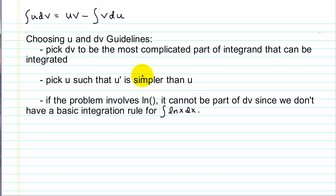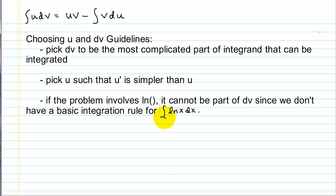The guideline on picking u is that we will be taking the derivative of u to create du, and our objective is that when we take the derivative of u, it becomes simpler — in general, a lower power or lower degree on the algebraic term. There will be some problems that involve a natural logarithm, and while that part might seem to be the most complicated, we cannot choose the ln part as dv because we don't have a basic integration rule for integrating ln(x). So when we have a ln, it will always be part of the u.